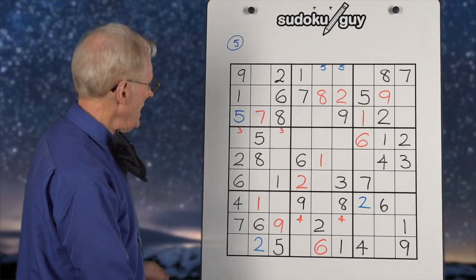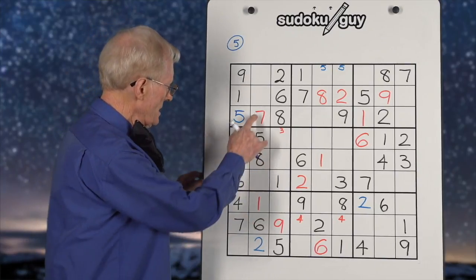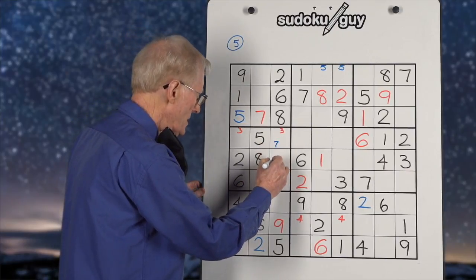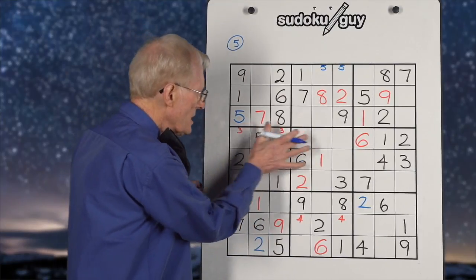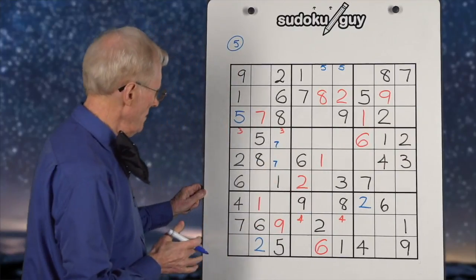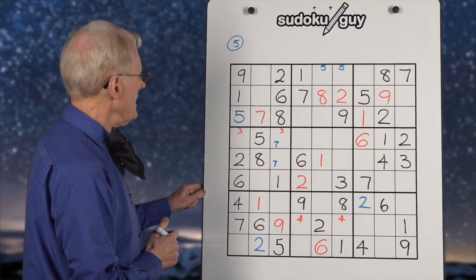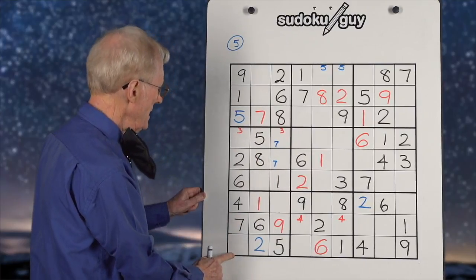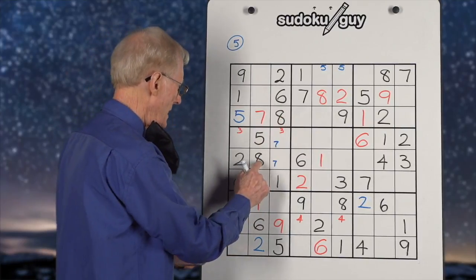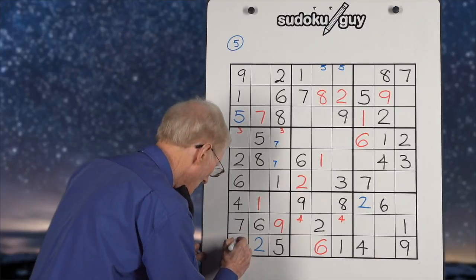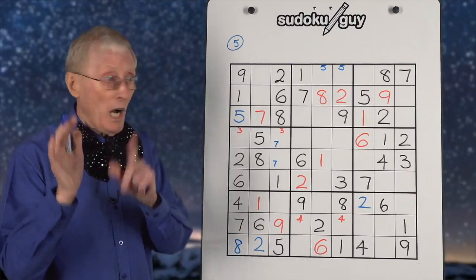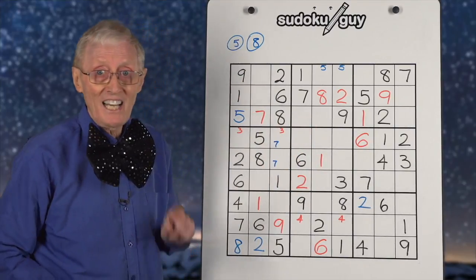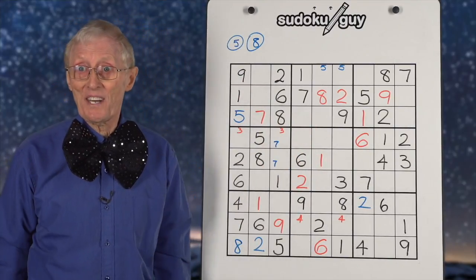Sevens: we have two sevens — one in the centre, one on the left — so we could have a seven here or a seven there. We look across and there's no seven in that row. Eights: we have an eight here and an eight here, no eight in the third position. Right, centre, left — this becomes an eight. And I can tell you right now, this eight is going to give us lots of other numbers.